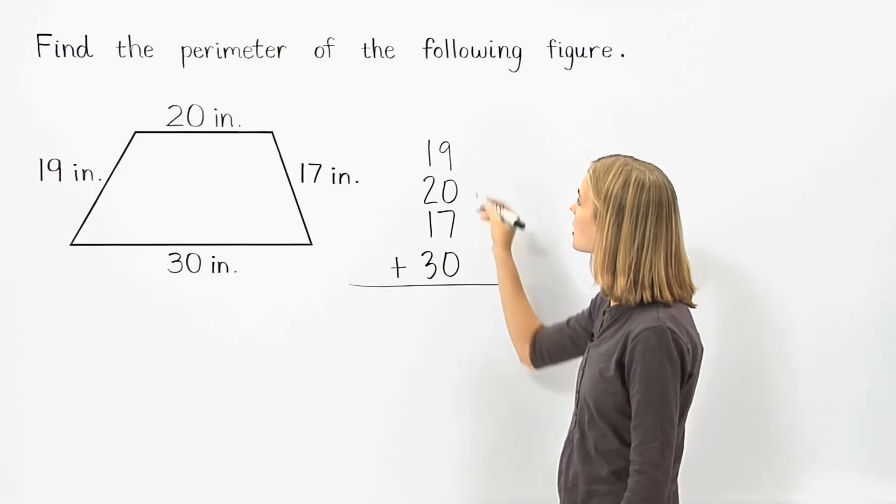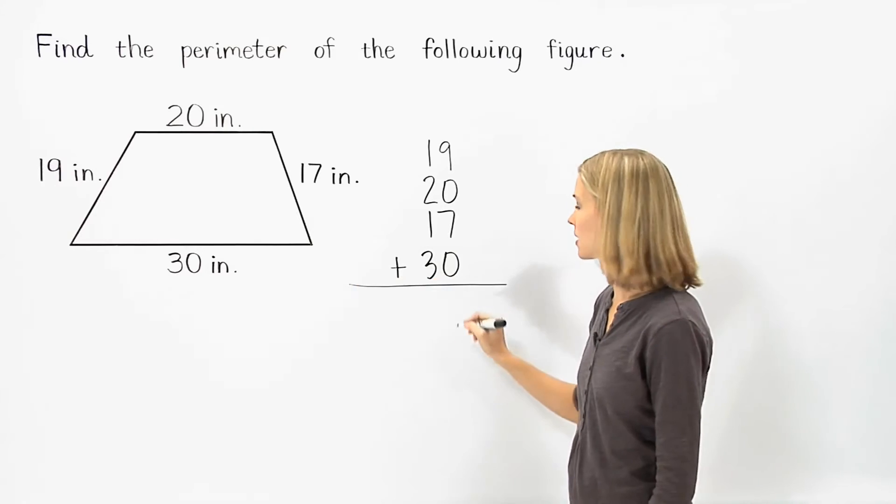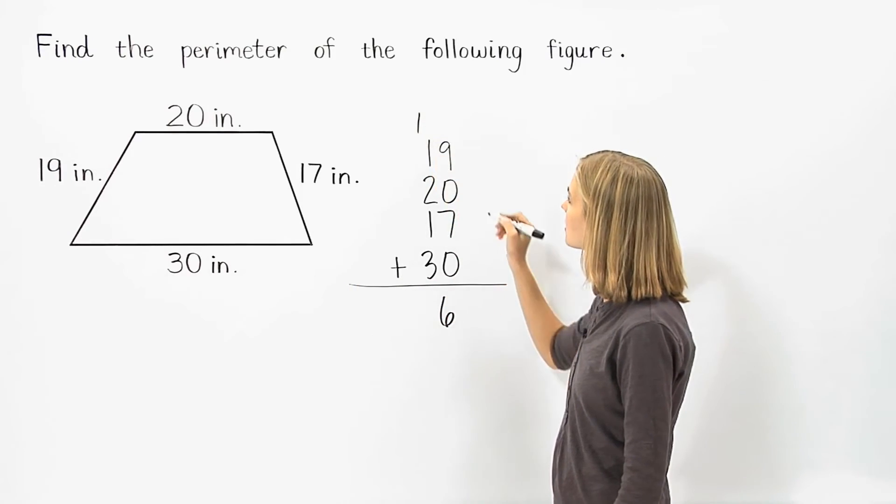In the units column, 9 plus 0 plus 7 plus 0 is 16. So we bring down the 6 and carry the 1. In the tens column,